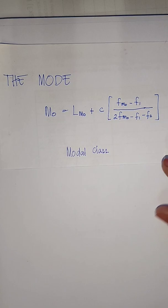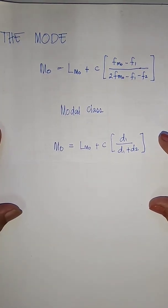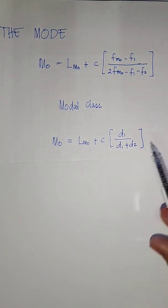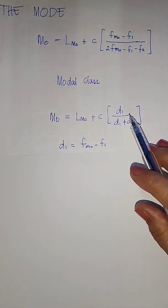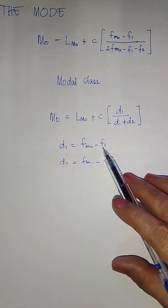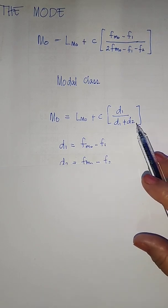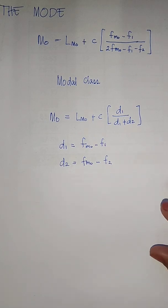Here we have another formula for finding the mode. MO is equal to LMO plus C times D1 over D1 plus D2, where D1 refers to the difference between FMO and F1, while D2 refers to FMO minus F2.